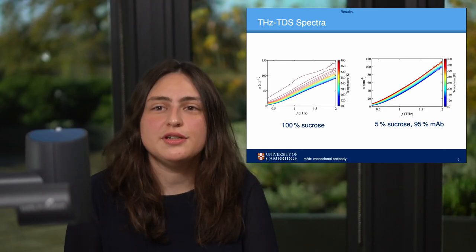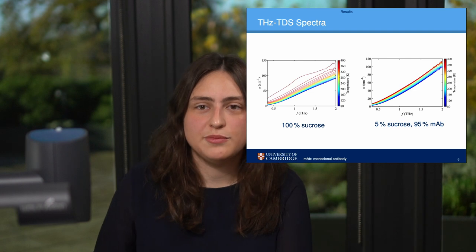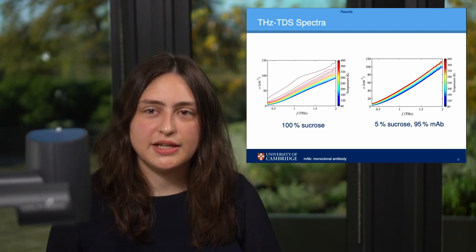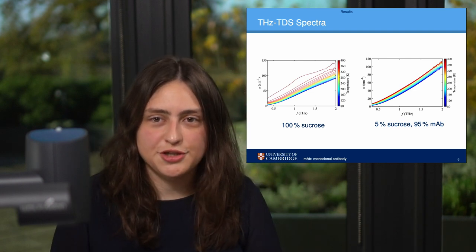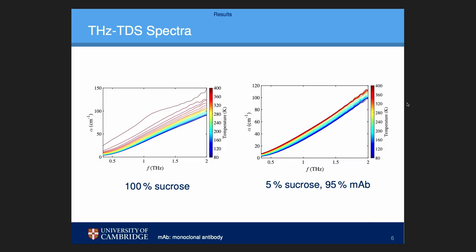We calculate the absorption coefficient at each temperature. On this slide you can see the absorption spectra of both sucrose on the left and a sample containing 95% antibody and only 5% sucrose on the right. On first glance, they look very similar.